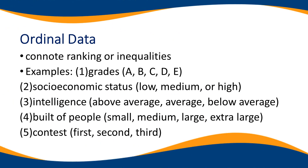Ordinal data connotes ranking or inequalities. Examples are grades, socioeconomic status — low, medium, or high — and intelligence levels: above average, average, below average. Rankings like first, second, third are also examples of ordinal data. Another example is good, better, best — may tinatawag na ranking.